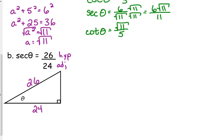Yes, I do realize that 26 over 24 simplifies, but for this specific triangle we need to leave it the way it is so we can correctly determine that third leg.